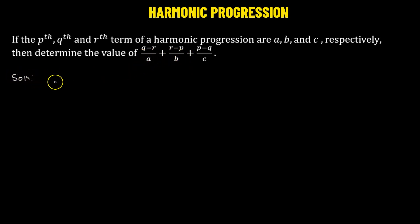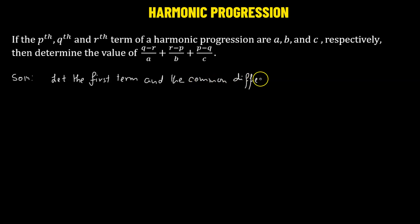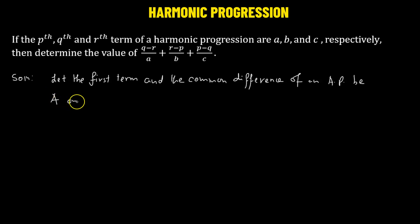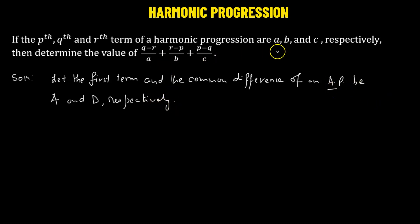First, what we'll do is consider an arithmetic progression. The reason we're choosing an arithmetic progression is because we know that if a sequence is in harmonic progression, then the reciprocal of each of its terms forms an arithmetic progression.